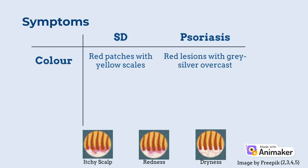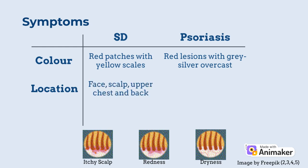Although psoriasis is also characterized by red scaling lesions, it tends to have a grayish-white overcast instead of yellow. It generally appears red or pinkish in lighter skin tones, and darker or purplish in darker skin tones. In terms of location, SD is usually found in areas where there are loads of sebaceous glands, like the face, scalp, upper chest, and upper back.